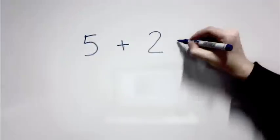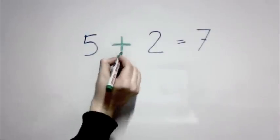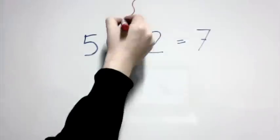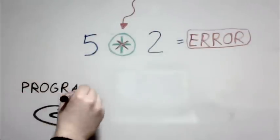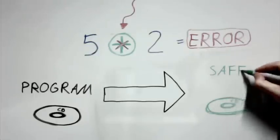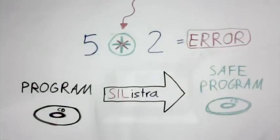Back to the original problem, wouldn't it be great to replace the unsafe operation with a safe one, one that would not be corrupted but return an error instead? In combination with an automatic transformation of a program into a safe program, this is what Silistra is all about.